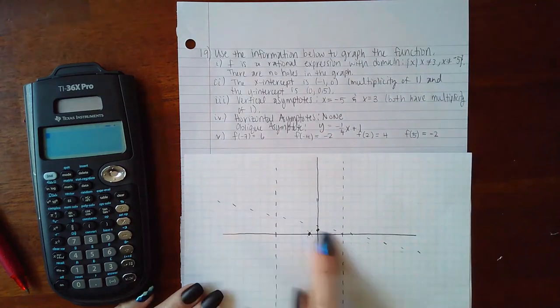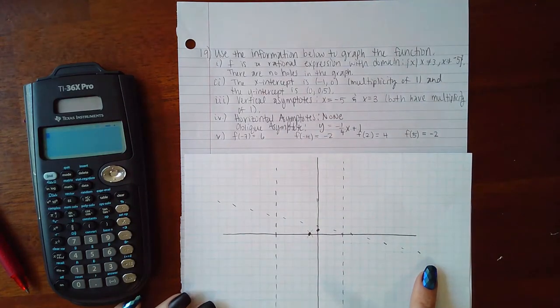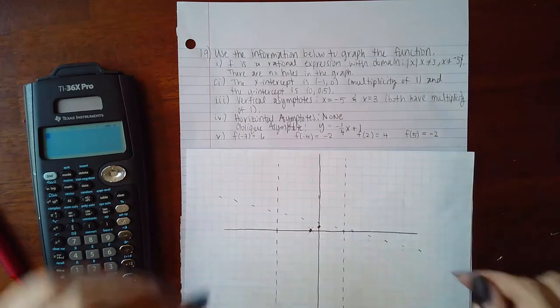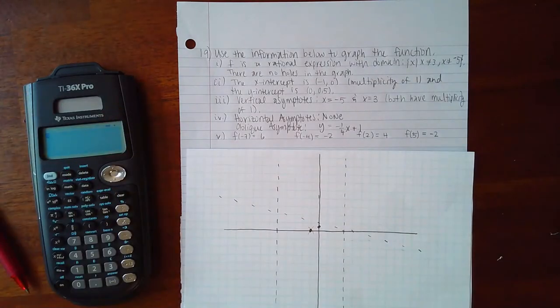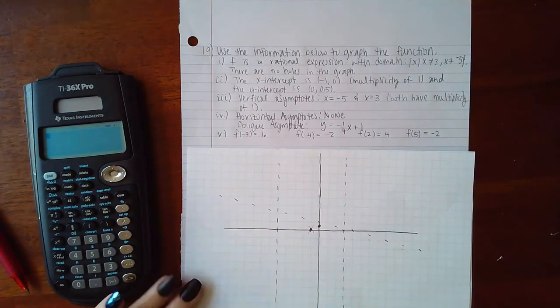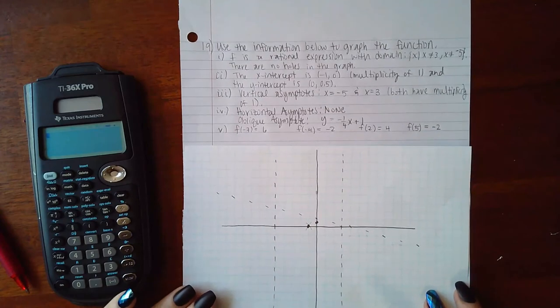So you have this horizontal dotted line here that you cannot... You can cross it in the middle, the ends just have to trail off to it on the ends. Then now it tells me that f of negative 7 is 6.